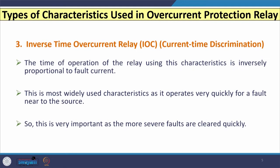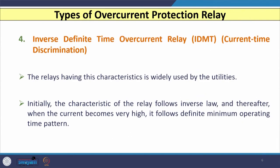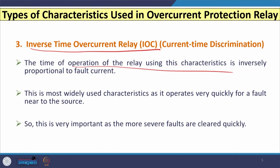Combining both current discrimination and time discrimination gives us the third type of characteristic: the inverse time overcurrent characteristic. In this case, the time of operation is inversely proportional to the magnitude of fault current — higher fault current means lower operating time, and vice versa. The most widely used sub-characteristics under inverse time are normal inverse, very inverse, and extremely inverse. As we move from normal inverse to very inverse to extremely inverse, the slope of the characteristic curve becomes steeper, so the user must select the most suitable characteristic for the application.